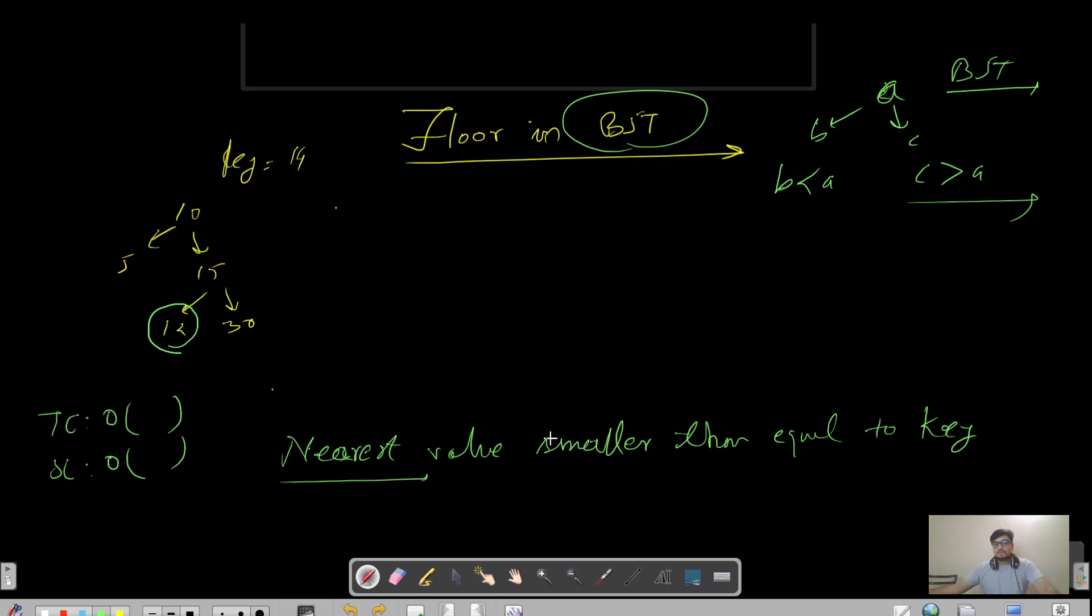So here if 14 would have been present in this particular tree then 14 is our answer. But 14 is not present, so the nearest value to this, close to the 14 present in this tree is 12.